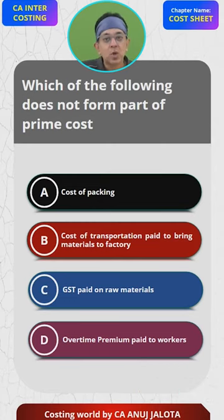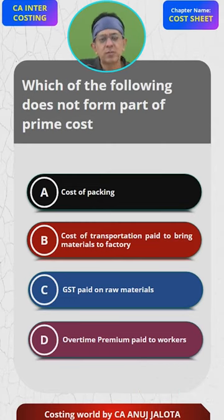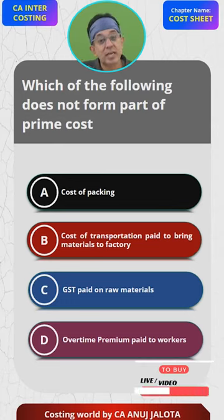Option D — overtime premium paid to the workers forms part of your direct labor cost, so that cannot be the answer either.